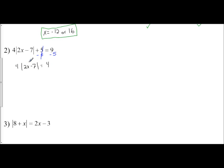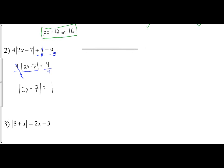Don't distribute the 4 in — you can't do anything with the expression inside because it's protected by the absolute value bars. Divide both sides by 4. Now the absolute value of 2x minus 7 is isolated and equals 1. That means 2x minus 7 is located one unit from 0 on the number line. One unit from 0 is either 1 or negative 1, so 2x minus 7 is located at negative 1 or positive 1.